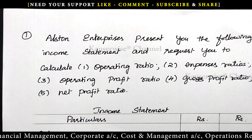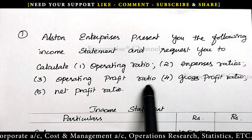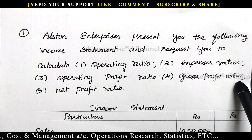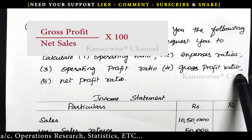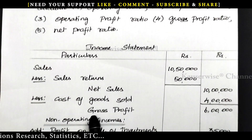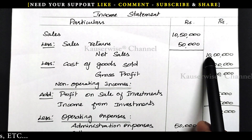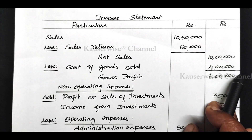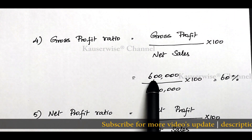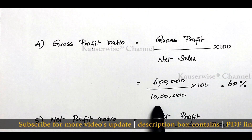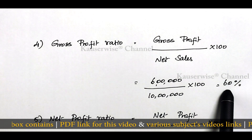Now let us see the gross profit ratio. The formula is gross profit divided by net sales into 100. Gross profit is 6 lakhs divided by net sales of 10 lakhs into 100 = 60%. So the GP ratio is 60%.